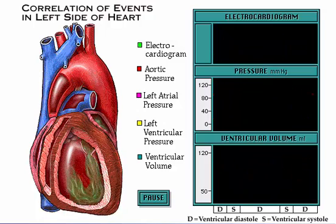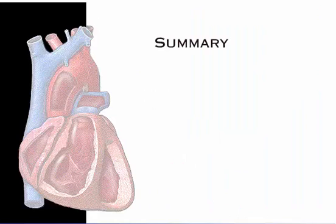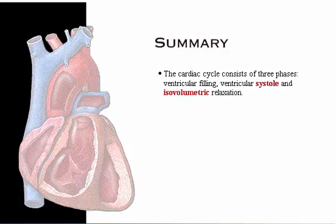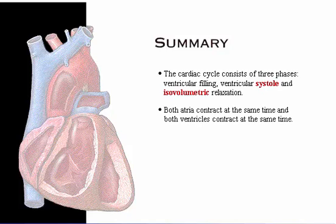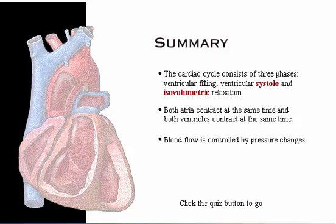Here's a summary of what we've covered. The cardiac cycle has three phases: ventricular filling, ventricular systole, and isovolumetric relaxation. Both atria contract at the same time, and both ventricles contract at the same time. Blood flow is controlled by pressure changes. Click the quiz button to go to the self-quiz.